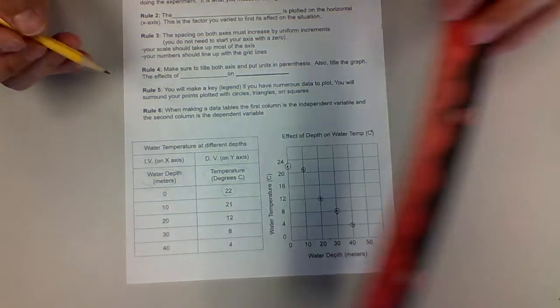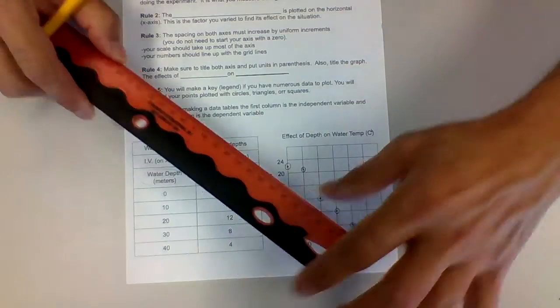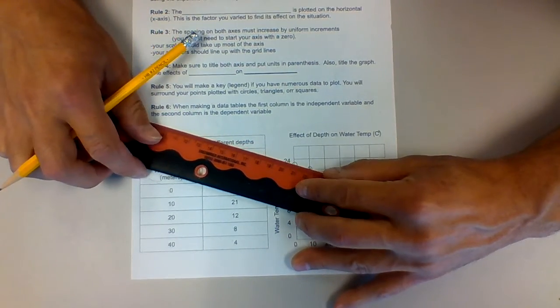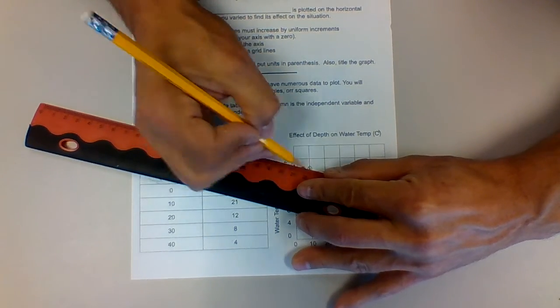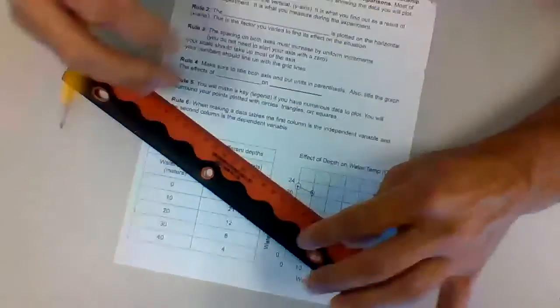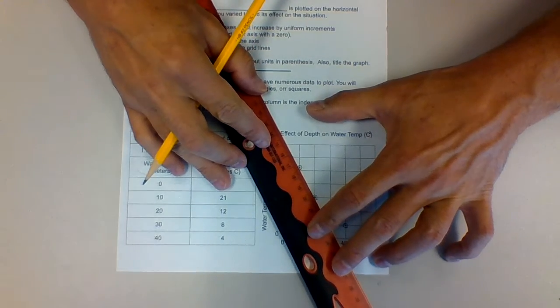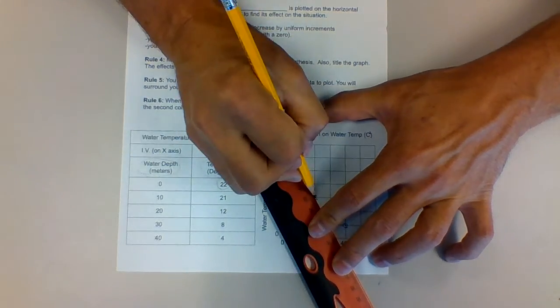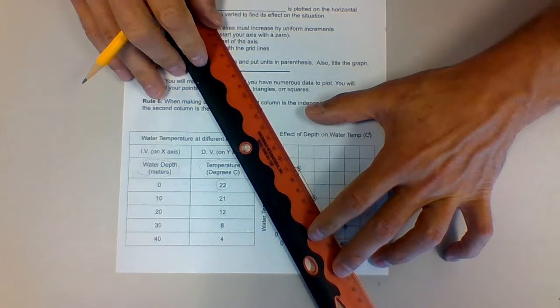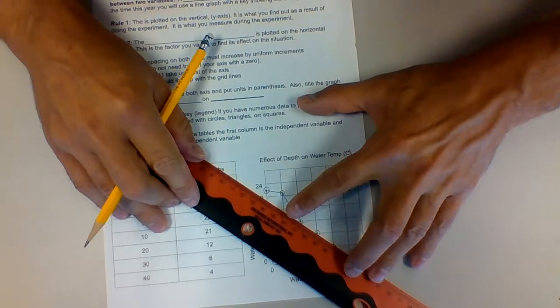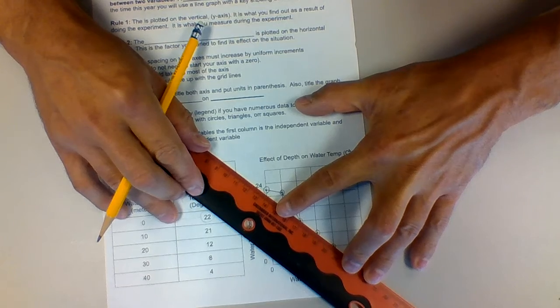But we do need to use a handy dandy straight edge or ruler to make sure that we connect our lines. That's going to give us our visual representation of the change over the variation in the x variable. So I connect those.